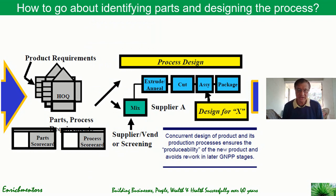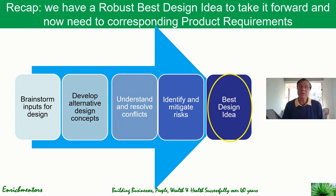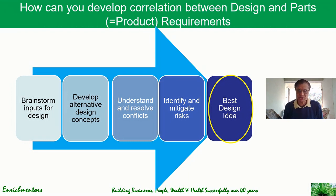We need to feed into the House of Quality the product requirements — the part requirements we need to have — and then go on to design the process, as you can see on your screen. To recap, we have a robust design idea or a couple of design ideas to take forward. What we now need to do is determine the corresponding product or parts requirements — the kind of parts we need. So, how can we develop the correlation between the design and the parts or product requirements?